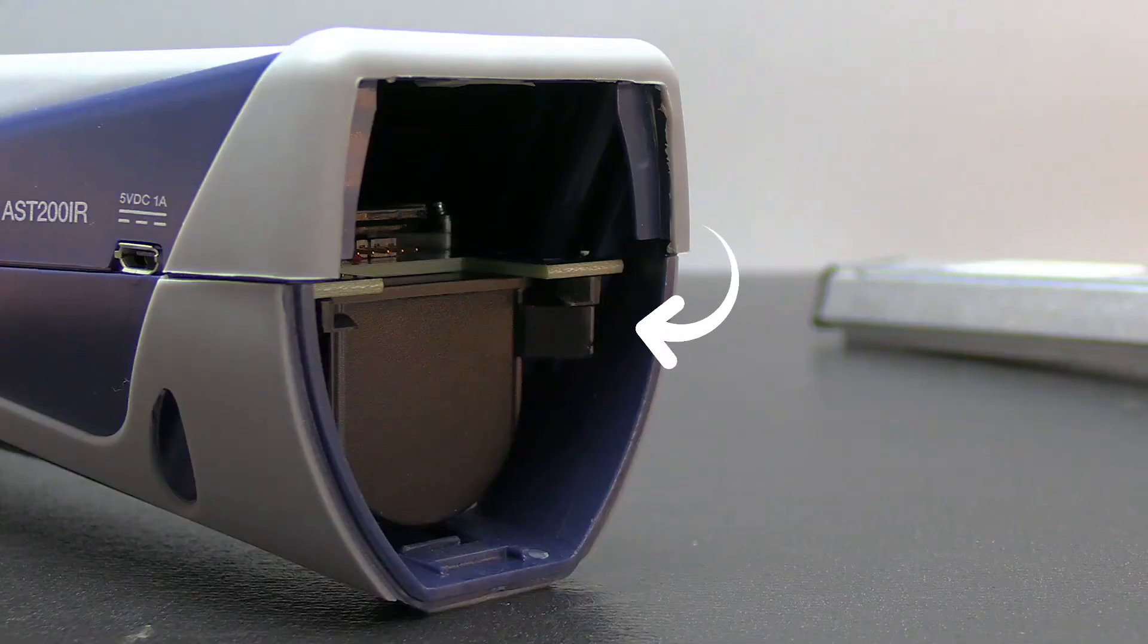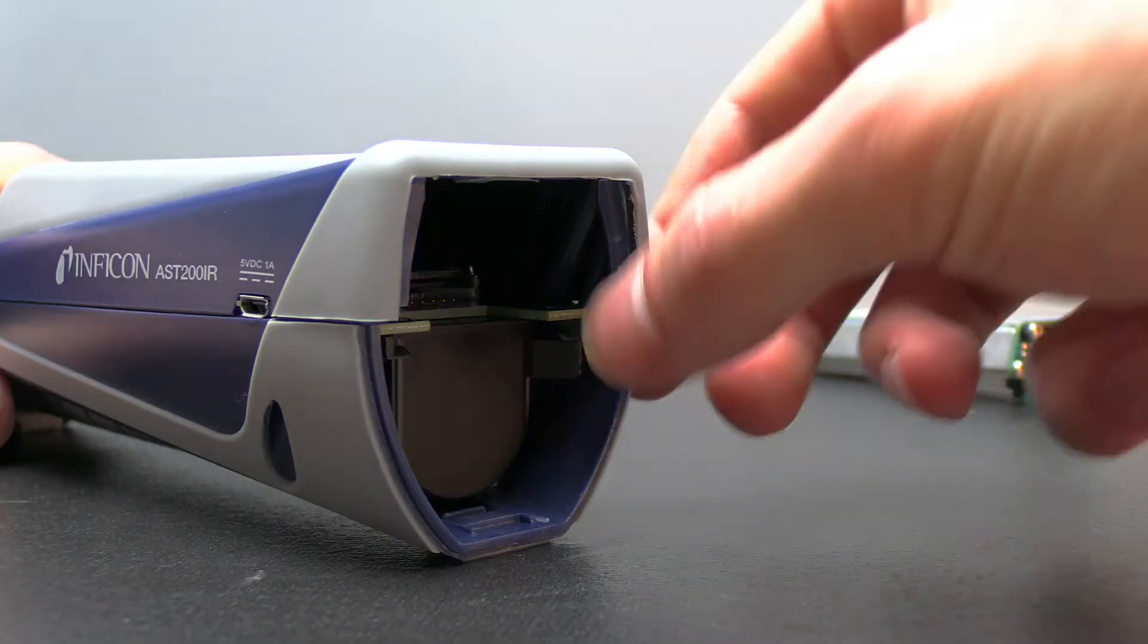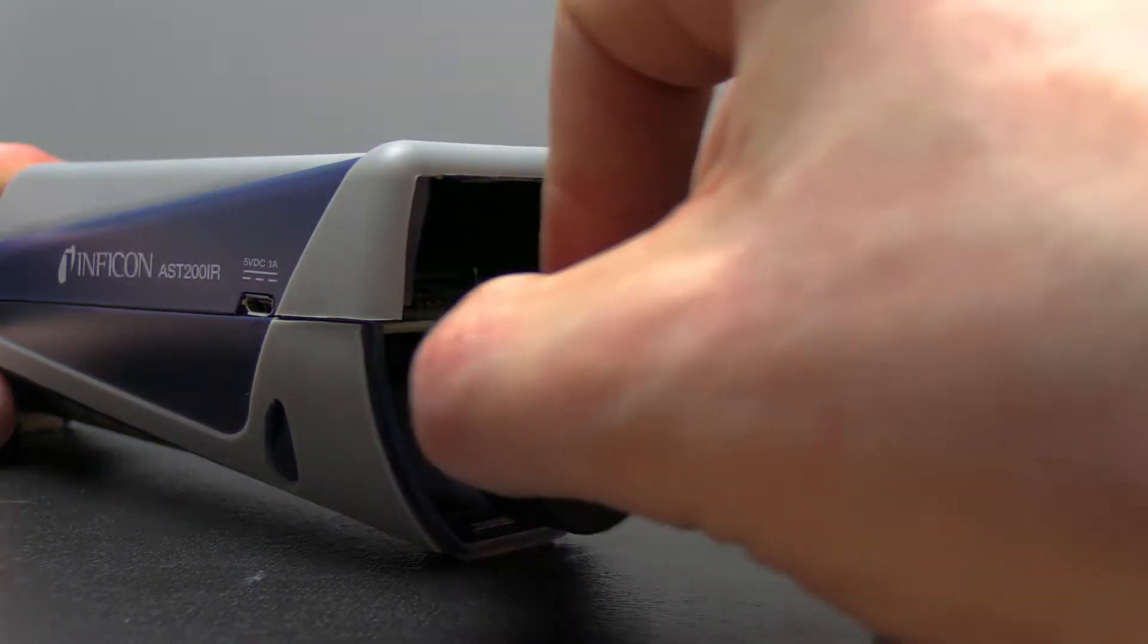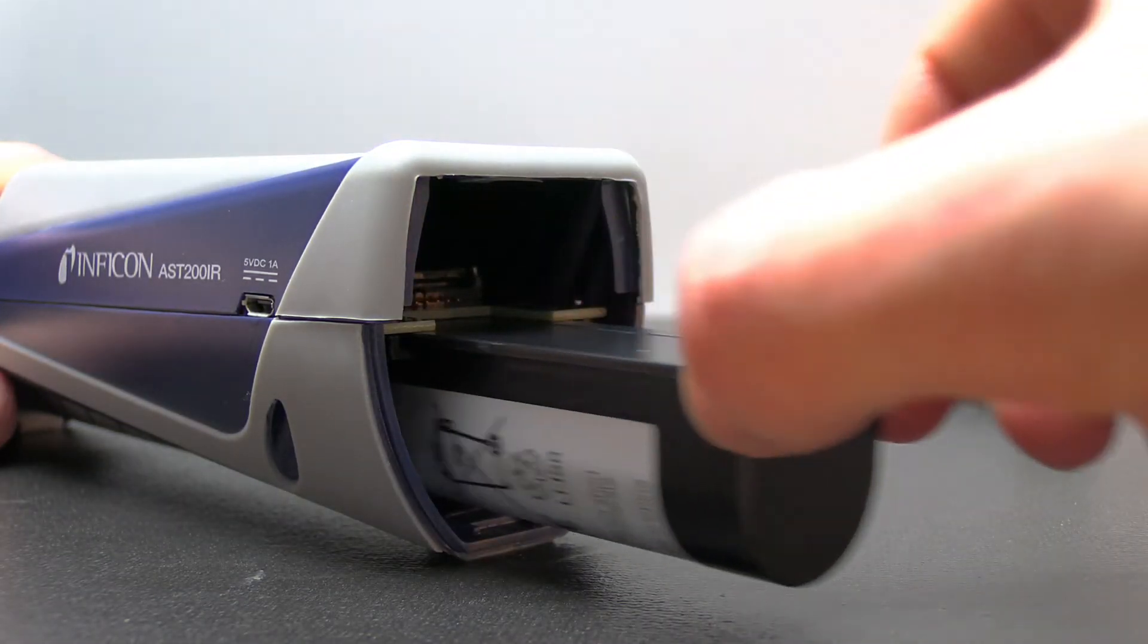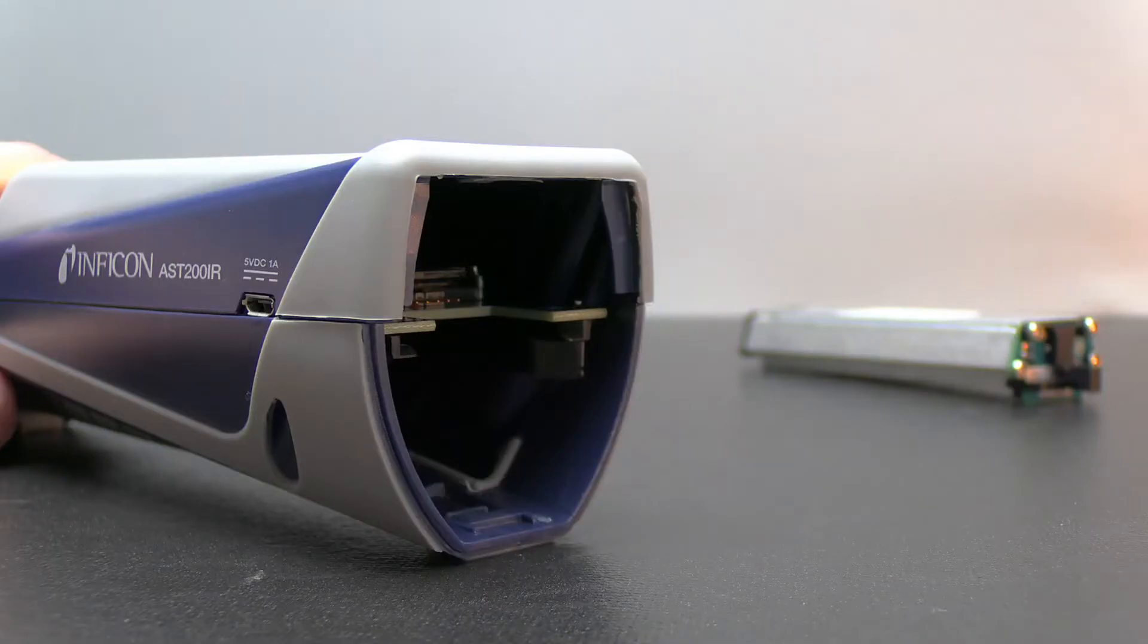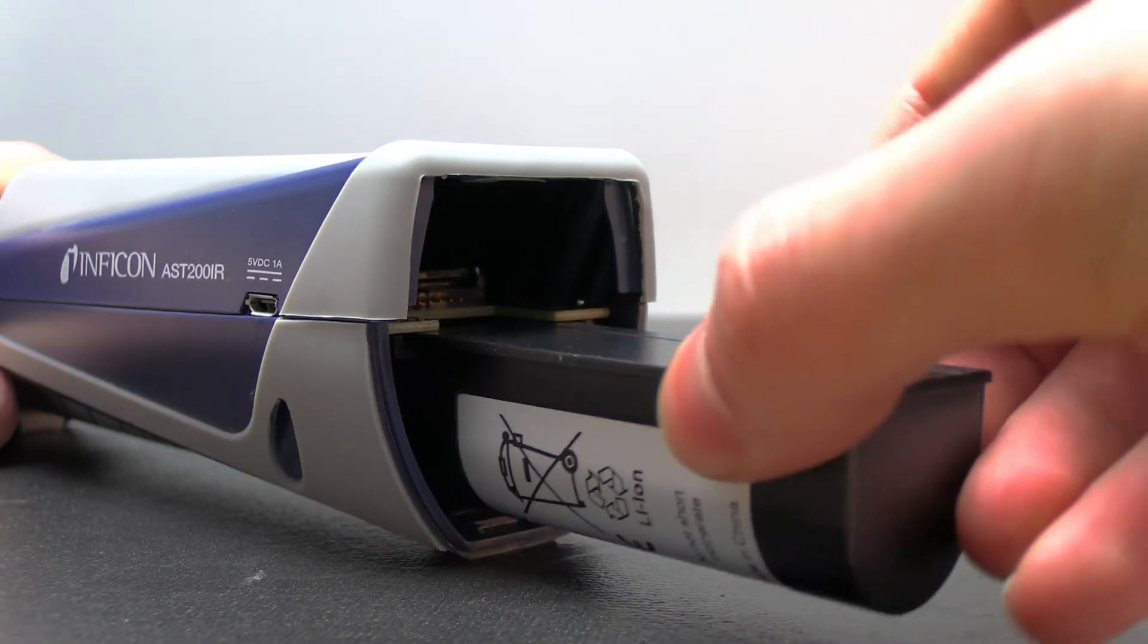To remove the battery move the release tab to the side and slide the battery out. Align the new battery with the rails and gently push in the battery until the release tab engages.